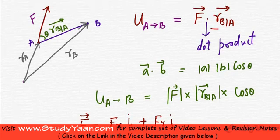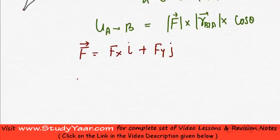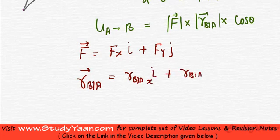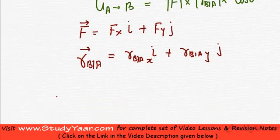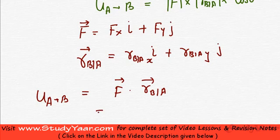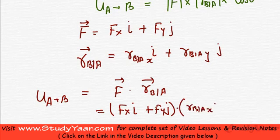my relative displacement vector can also be written in X and Y components. So, I would have R_B by A is equal to R_B by A X times i plus R_B by A Y times j. So, now, my work done from A to B is going to be F dot R_B by A vector which is going to be (Fx i plus Fy j) dot (R_B by A X i plus R_B by A Y j).